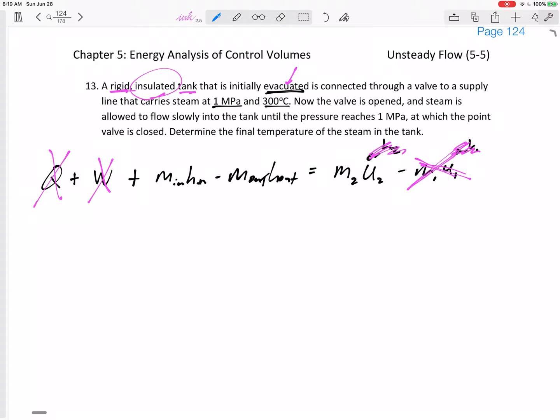All right, it's connected through a valve to a supply line that carries steam at 1 MPa at 300 degrees C. So this steam coming in is the steam at 1 MPa at 300 degrees C. You know, if they tell me it's steam at 1 MPa at 300 degrees C, I bet I could find any other value that I wanted, including the H. I bet I could find the H of that steam that's coming in from that supply line.